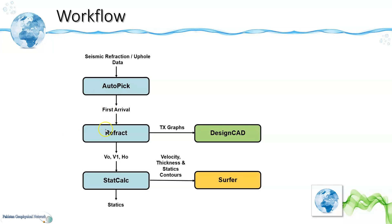Then these first arrivals are input into the second module which is refract where travel time inversion is performed and the velocities and thicknesses of the weathered and sub-weathered layers are computed.